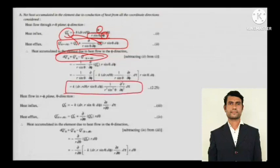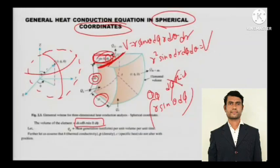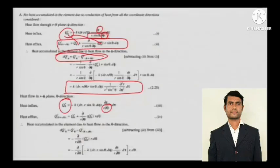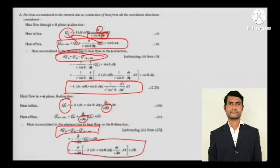Now heat flow in r-phi plane in theta direction. Heat influx in theta - this is the complete thing, I will show you, this is the complete thing. So this will be the thickness, this is the thickness, and the same thing goes on. Subtract it, just by little arrangement, get this.